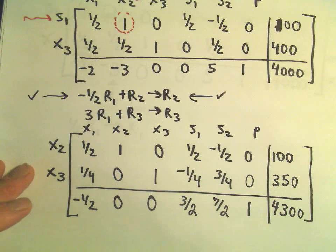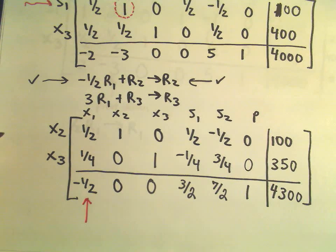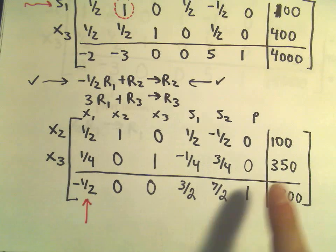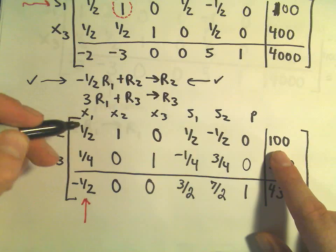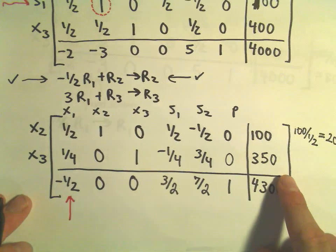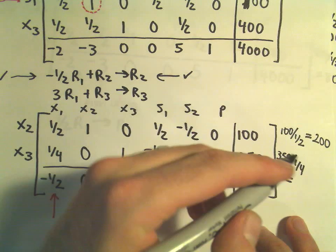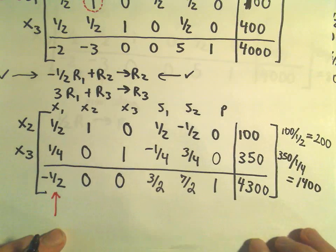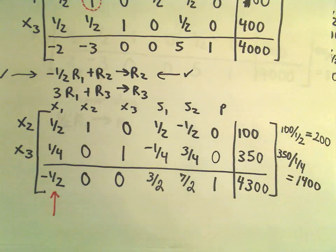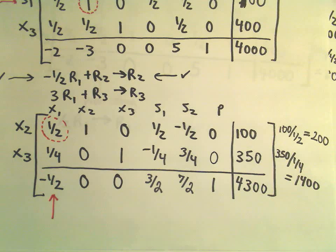Unfortunately, we still have to look at our bottom row. Since there are still negative numbers, that means we're not finished yet — we've got to do at least one more step. Our first column is going to be our pivot column. I take the number on the right and divide by the value in the column: 100 over one-half is 100 times 2, or 200. We'll have 350 divided by one-fourth, which is 350 times 4, giving us 1,400. We pick the smaller value — 200 — and that intersection gives us our new pivot element, one-half.